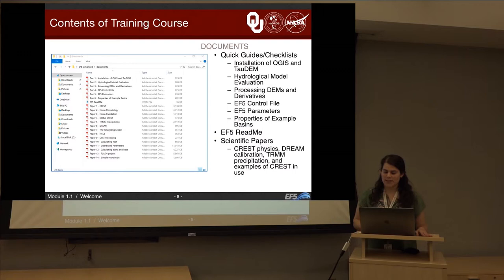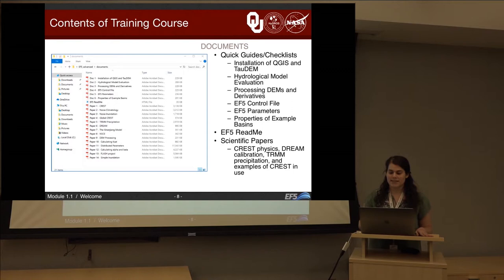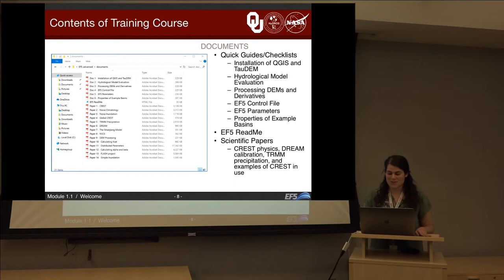In the documents folder, you can find the quick guides and checklists — a list of what to do when installing QGIS and TauDEM, how to evaluate model evaluation indices, and how to process DEMs and derivatives. You can find the EF5 control file, the EF5 parameters, properties of example basins, the EF5 README, and many scientific papers that show peer-reviewed information about the models we use.